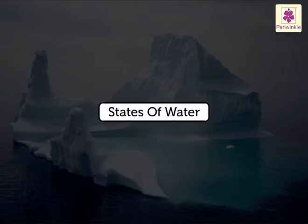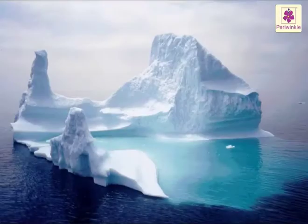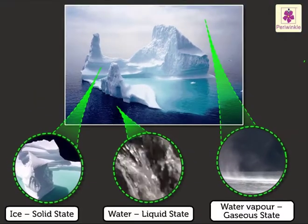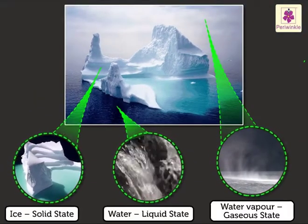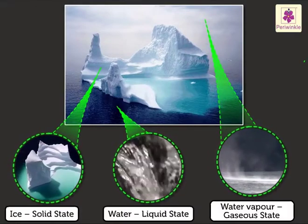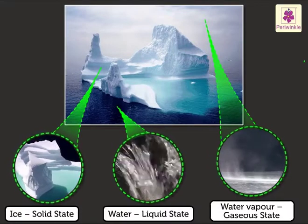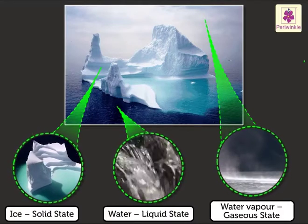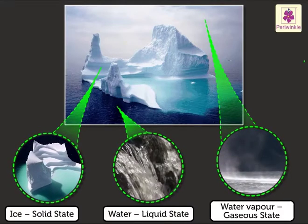Water is the only substance on Earth that naturally occurs in three different forms: as ice in the solid state, as water in the liquid state, and as steam or water vapour in the gaseous state.